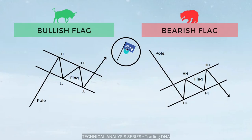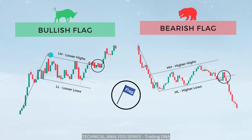Moving on to the next pattern: flag patterns. As the name suggests, this pattern looks like a flag with a pole. This is the pole of the flag, and this is the flag, which travels between two parallel channels — one trend line and another perfectly parallel trend line. Bearish flag is just opposite to the bullish flag; here is the pole of the flag and this is the parallel channel. A stock is in an uptrend, enters this channel, and forms lower highs and lower lows. Once the high is broken you can go for a long. Bullish flags are mostly continuation patterns — the stock is in consolidation and then continues the same trend. Bearish flag is the straight opposite.